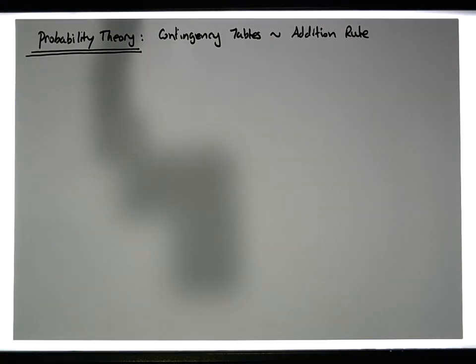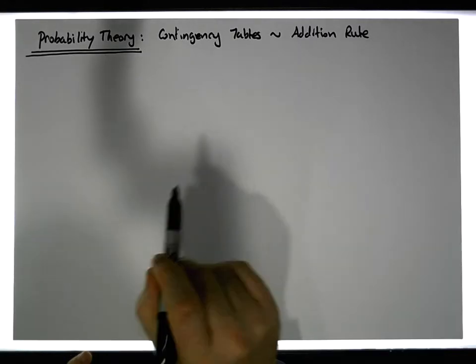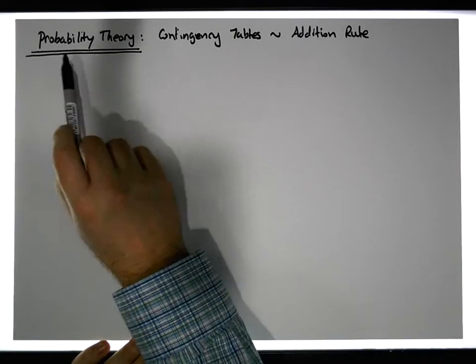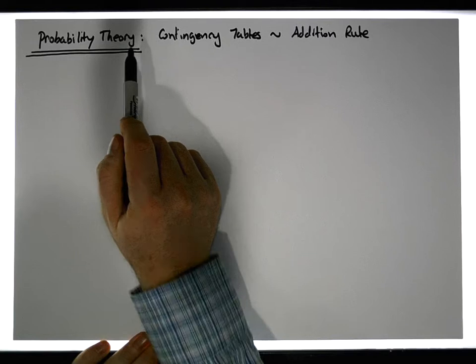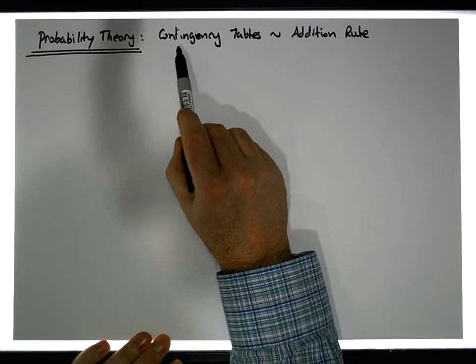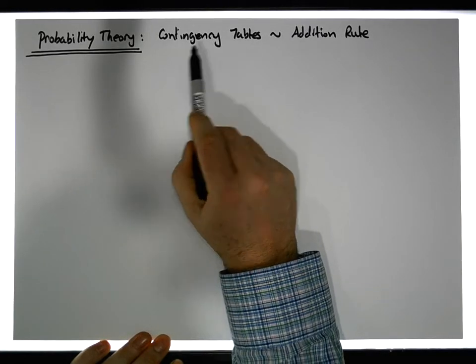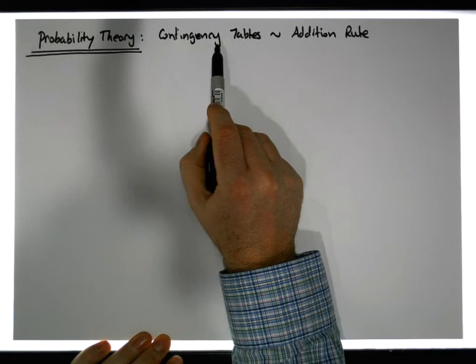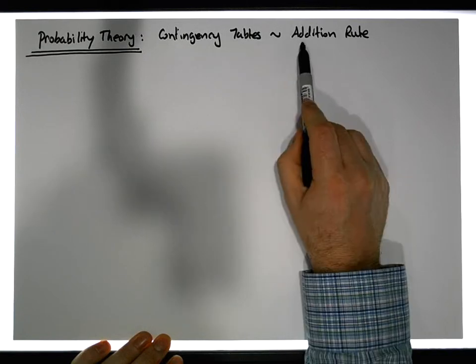Hi guys, this is Jonathan Lambert with the Mathematics Development and Support Service at the National College of Ireland. In this short video, another video in our series dealing with probability theory, we're using a contingency table to explore particular rules of probability.